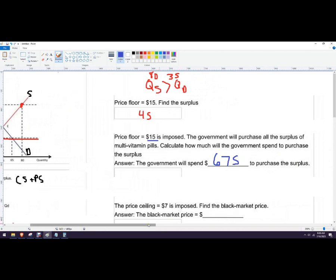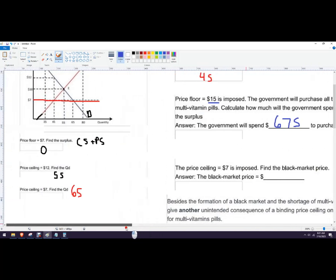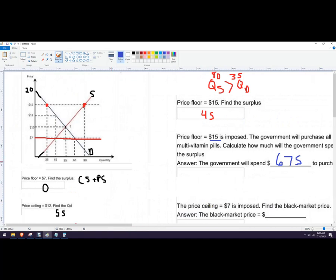And then a different sort of question when the price ceiling of $7 is imposed, find the black market price. So what's going to happen if at $7 the sellers only want to sell 45 units. The buyers at that price will want to buy 65, but some of the sellers will recognize,